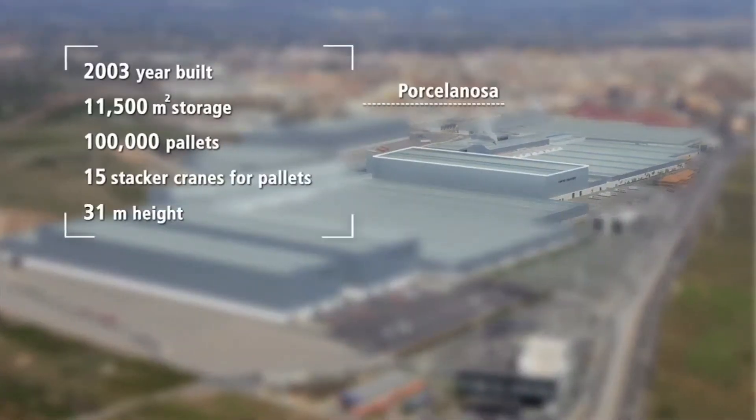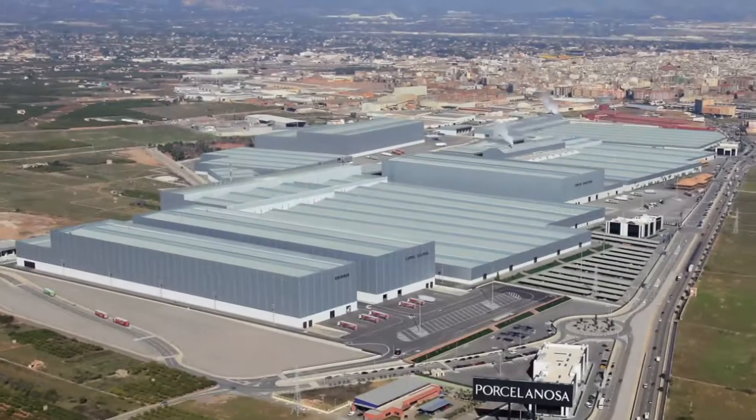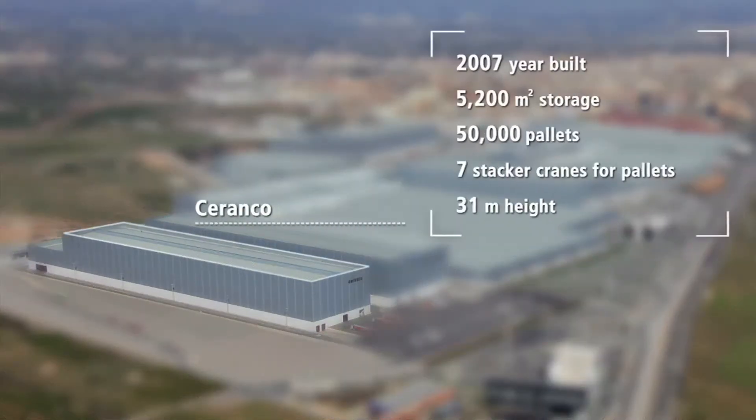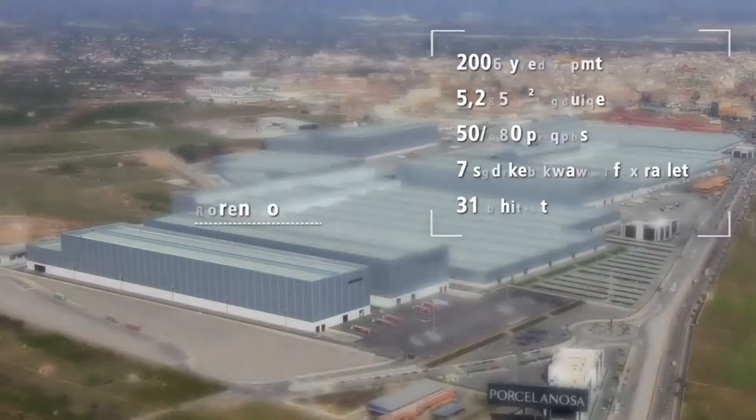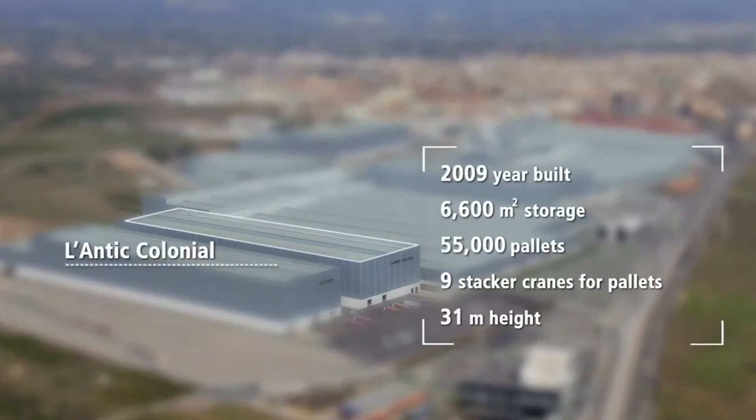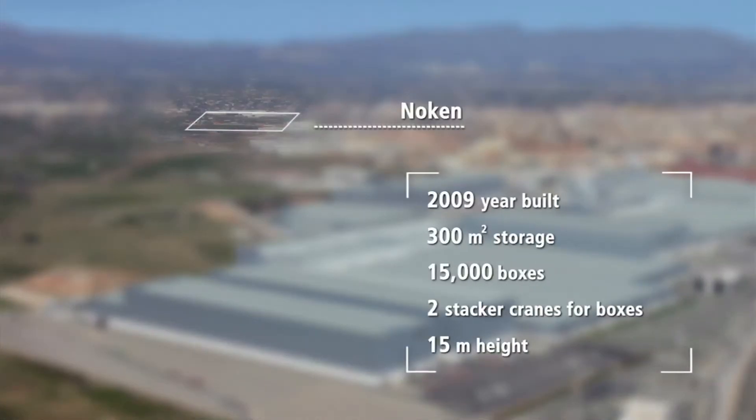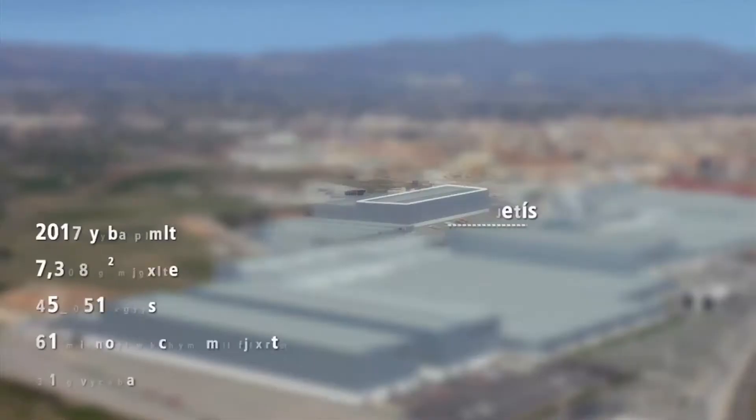Mecalux took its first steps in this great project with the Porcelanosa Logistics Center in 2003, followed by the Soranko Center. Six years later, the Lante Colonial and Knockin Centers were built, and finally, Venice in 2011.